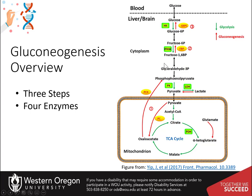Two novel enzymes are also required to convert fructose 1,6-bisphosphate back into fructose 6-phosphate, and glucose 6-phosphate back into free glucose. Note that you have already learned about this last step in our section on glycogen metabolism. That means you only have four new enzymatic steps to learn.